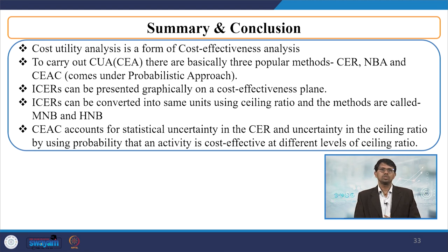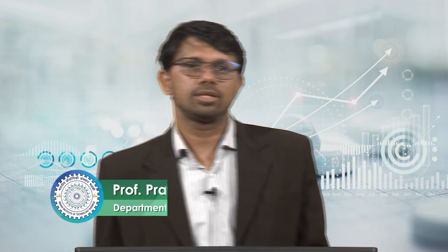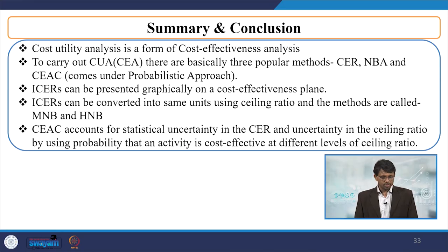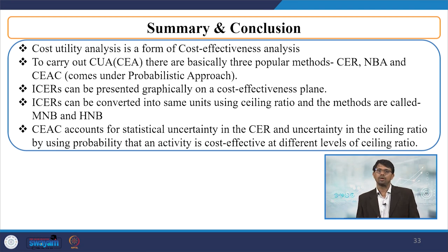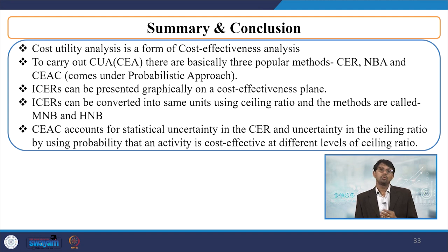In summary and conclusion: we discussed cost utility analysis in the form of cost-effectiveness analysis, carrying out CUA as part of CEA. CUA is an extension of CEA. There are three popular methods: ICER (CER), Net Benefit (NB), and CEAC. CEAC is part of the probabilistic approach. ICER can be presented graphically on a cost-effectiveness plane. ICER can be converted into the same units using the ceiling ratio — the methods are called MNB or HNB. CEAC accounts for statistical uncertainty in the CER and uncertainty in the ceiling ratio by using the probability that an activity is cost-effective at different levels of ceiling ratio.